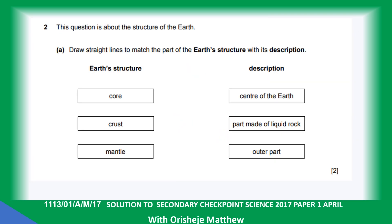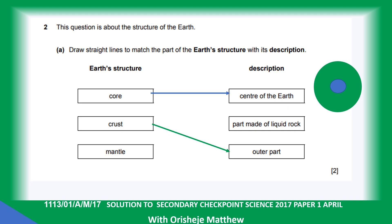Question two: draw a line to match the structure to its description. We have three parts of the Earth's structure — the core, the crust, and the mantle. The core is the centre of the Earth. The crust is the outer part of the Earth on which we carry out a lot of human activity. The mantle is between the core and the outer part.